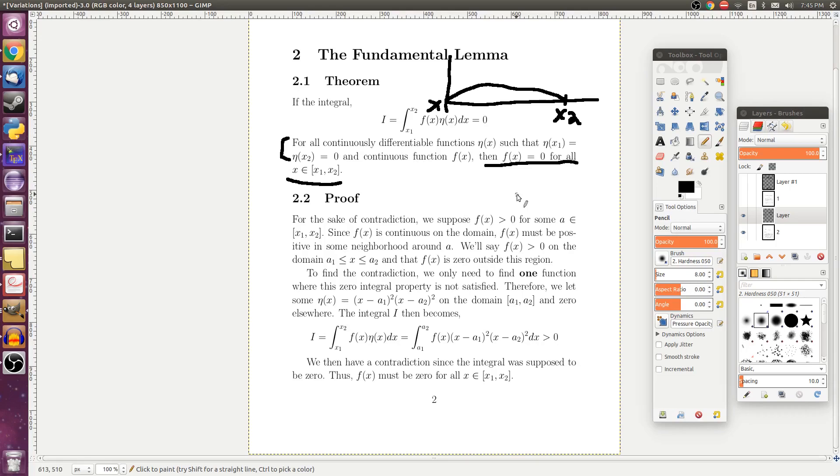So it doesn't matter if we say it's positive or negative, so we'll just say it's positive, just because we have to choose something. So we'll say that f of x is greater than zero for some point a in that domain. So let's say we've got x1 right here, x2 right here, and we've got our point a right here.